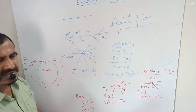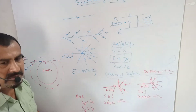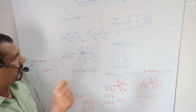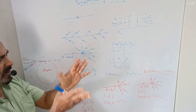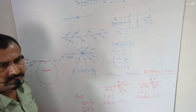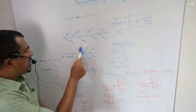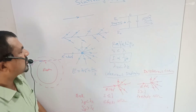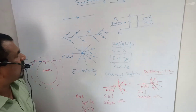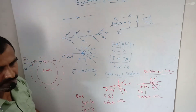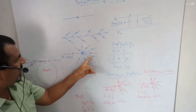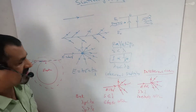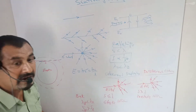Because particles — dust particles, smoke particles, atoms, and molecules — are suspended in the medium. The spreading of light in all possible directions when light is passed through particles suspended in the medium is called scattering of light.